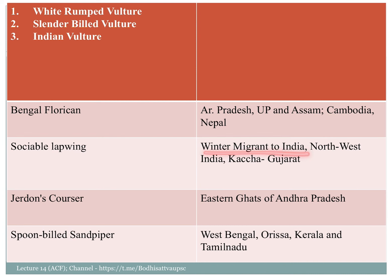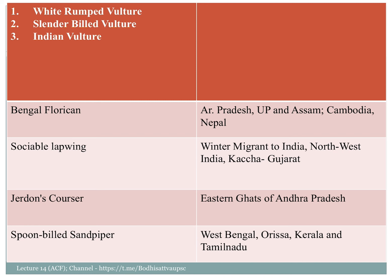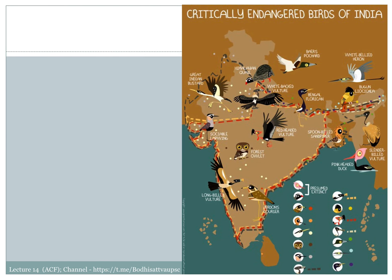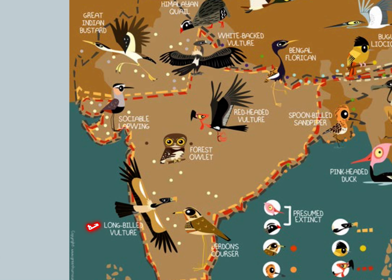The Jerdon's Courser is a winter migrant to India, found in the Kach Vistar area. It is found in the Eastern Ghats of Andhra Pradesh and is associated with a Wildlife Century. The spoon-billed sandpiper is found in West Bengal. It is also a critically endangered species.